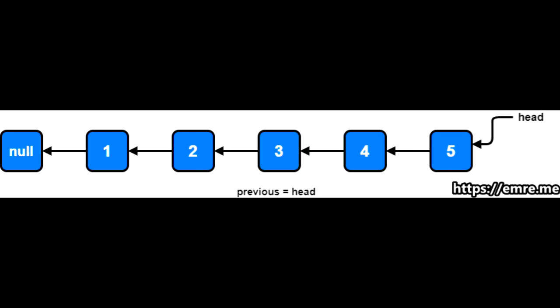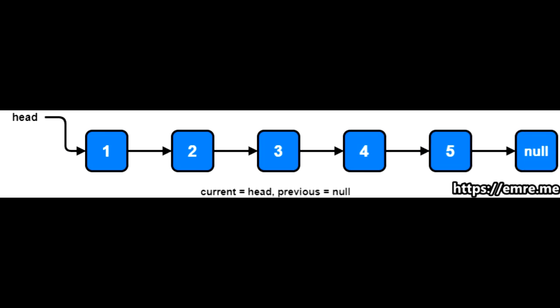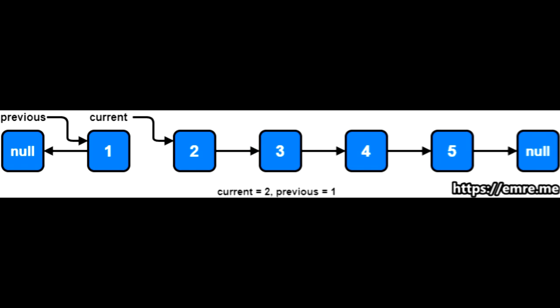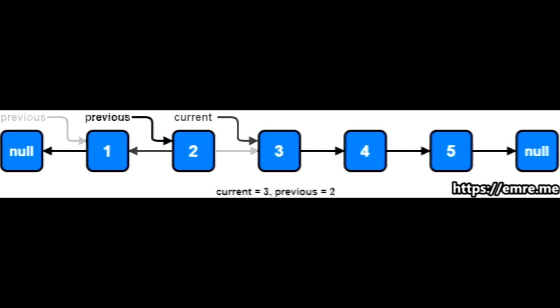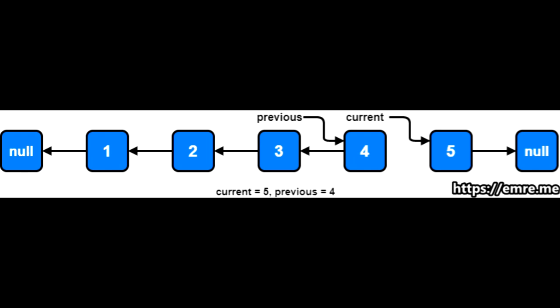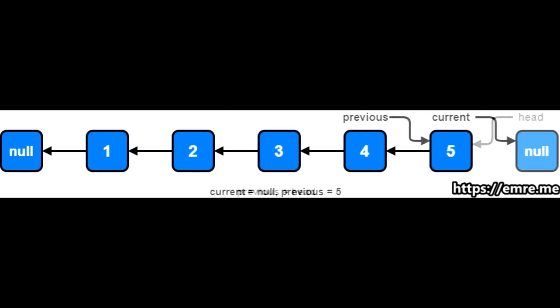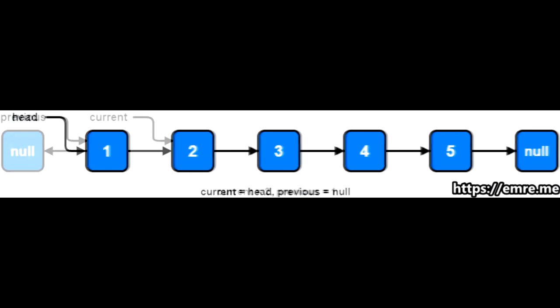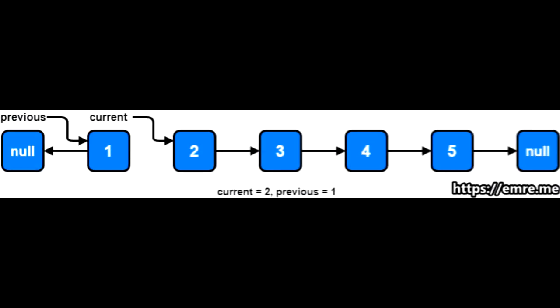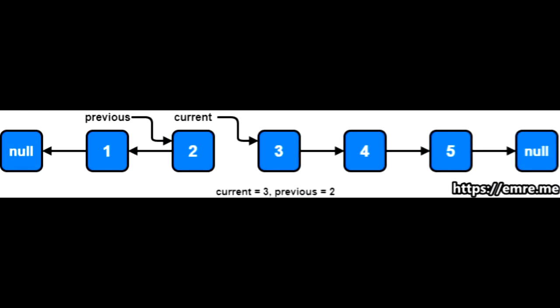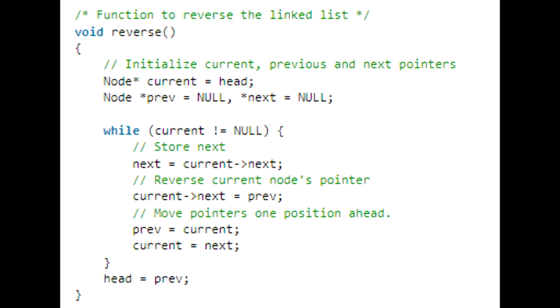Looking at the diagram, we have a previous node and a current node. As we go down the linked list, current's next points to previous. We update the nodes as we go: previous becomes current, and current goes to current's next, and so on until we reach the end of the linked list.